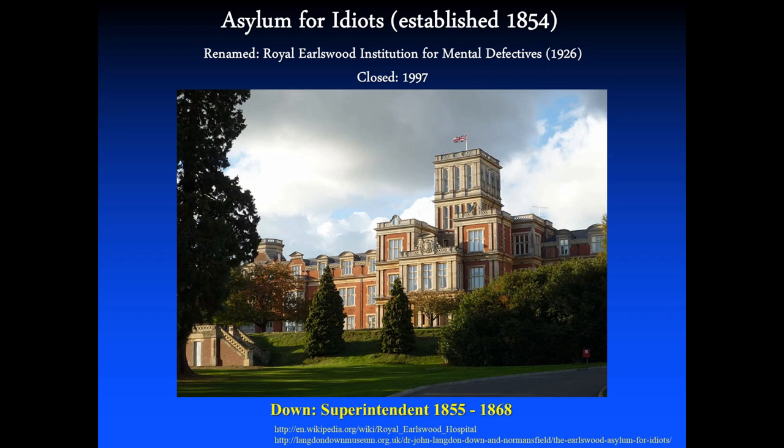Langdon Down was the superintendent at the Asylum for Idiots from 1855 to 1868. It was renamed the Royal Earlswood Institution for Mental Defectives in 1926 and was finally closed in 1997. Today I believe it's apartment units.